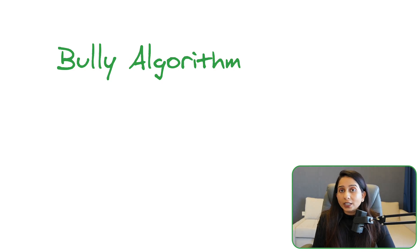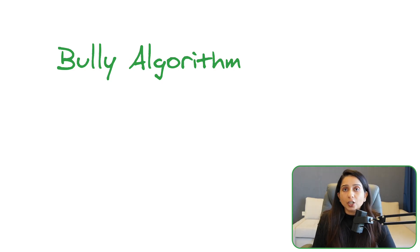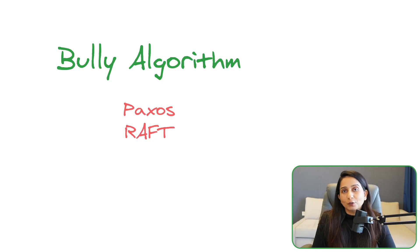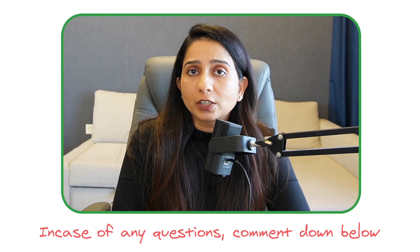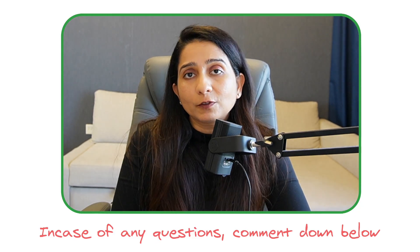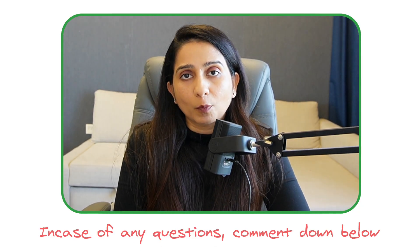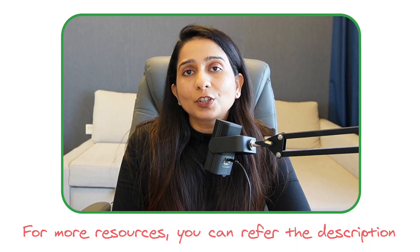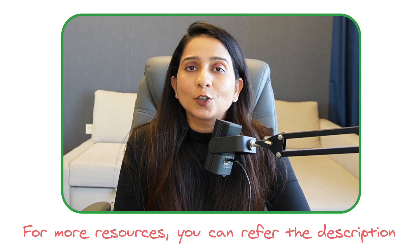Other than that, the Bully Algorithm is just one of the leader election algorithms. More complicated algorithms that actually work for very large distributed systems are Paxos and Raft. Let me know in the comments if you want a video on either or both of those algorithms. If you have any questions about the Bully Algorithm, feel free to share them in the comments as well. There are resources linked in the description — see you in the next video, take care.